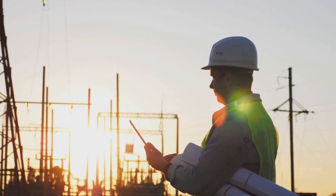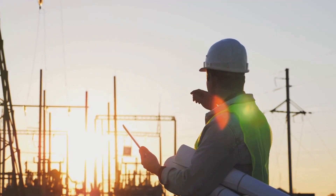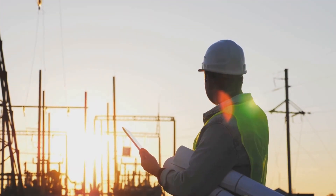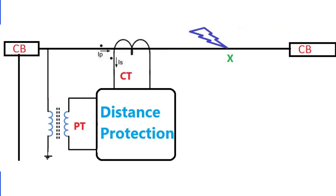Next, we have underimpedance, differential, and restricted earth fault protection. Starting with underimpedance, or distance relay protection: this becomes crucial when there is a significant difference between the maximum and minimum short-circuit fault MVA. This protection is particularly preferable for transformers connected to networks.